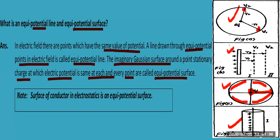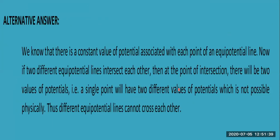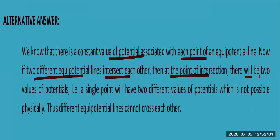Welcome back for some of the most important questions of electrostatics. There is a constant value of potential associated with each point of an equipotential line. Now if two different equipotential lines intersect each other, then at that point of intersection there will be two values of the potential for a single point, which will have two different values of potential.